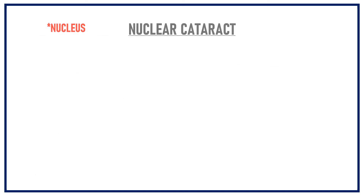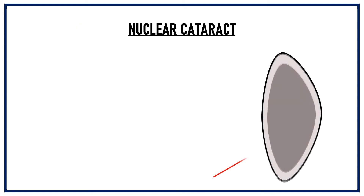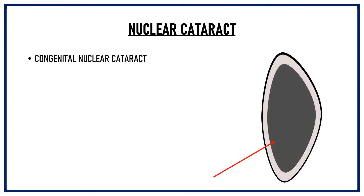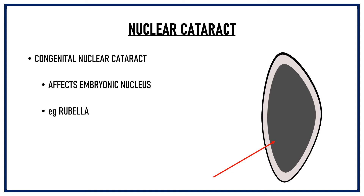When the lens nucleus is involved as part of the cataract process, it is known as a nuclear cataract. Congenital nuclear cataract affects the embryonic nucleus and is seen in rubella. In adults, nuclear cataract is a very common presentation of senile cataract.